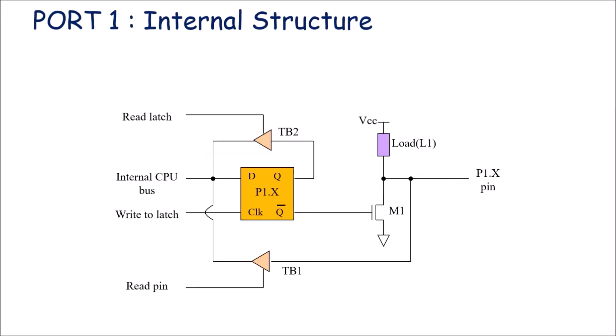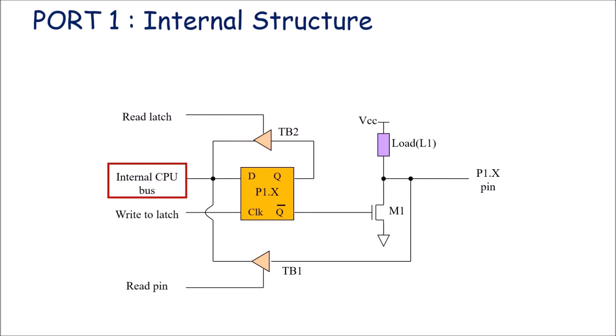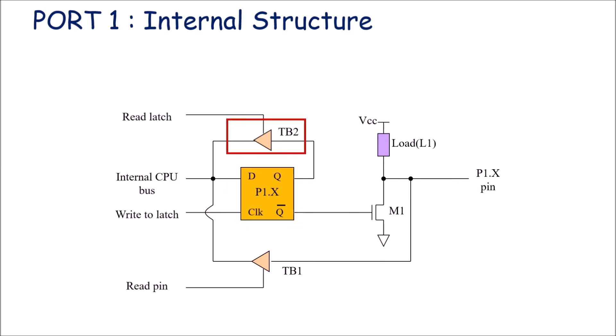Let us understand the internal structure of port 1. Port 1 has 8 terminals, P1.0 to P1.7, and each port pin has the same type of internal structure, referred to as P1.x. The internal CPU bus of each terminal is connected to a D latch or D flip-flop. The Q output of the flip-flop is connected to a tri-state buffer, which is used to read data from the latch.